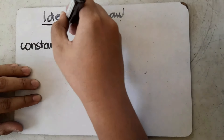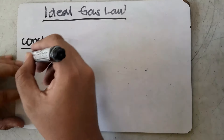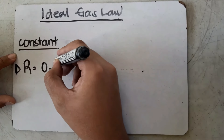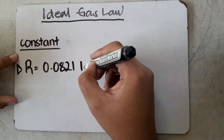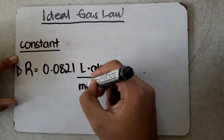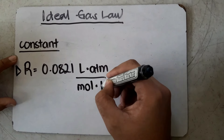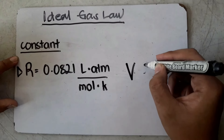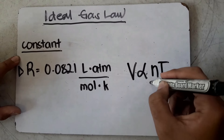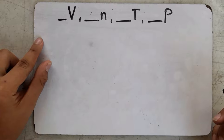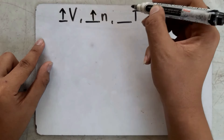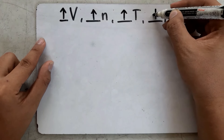Ideal Gas Law has the constant R, which is the universal gas constant, equal to 0.0821 liters times atmosphere over mole times Kelvin. Volume, number of gases, and temperature are directly proportional, while inversely proportional to pressure. As volume goes up, so does the number of gas particles and temperature, while pressure decreases, and vice versa.